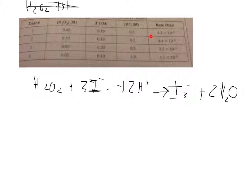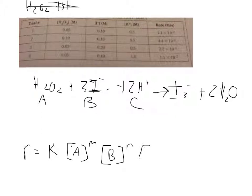The way you determine the reaction rate law is you say that the rate equals K times—we'll call H2O2 A, we'll call I negative B, we'll call H+ C. So it's equal to K times A to the M times B to the N times C to the P.